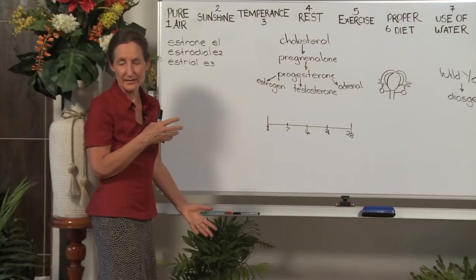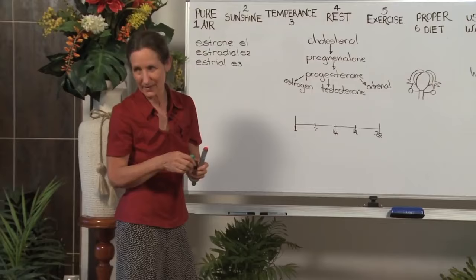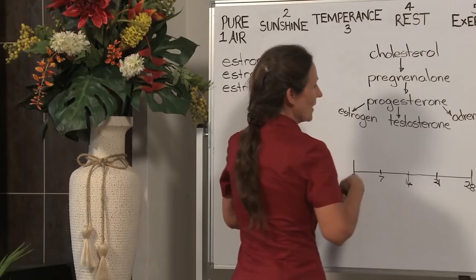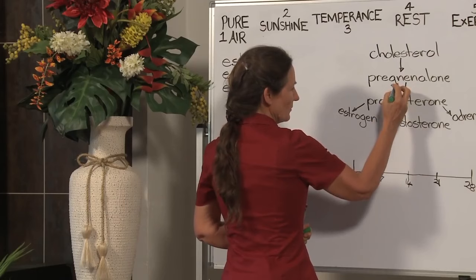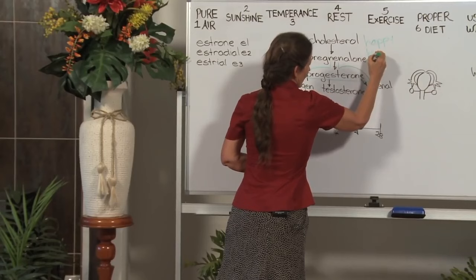I'm going to explain the monthly cycle like a dance because it is like a dance - different players come onto the stage at different times of the month. Let me introduce you to our star players. One is progesterone, and progesterone is going to be wearing a green dress.